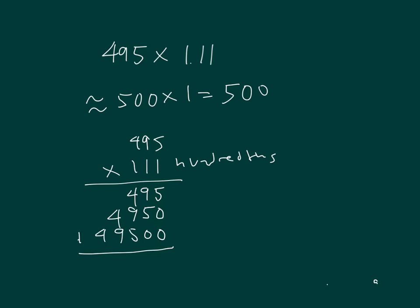Add them. 5, 14, regroup of 1, 14, 19, 9, regroup of 1, 14, 4, regroup of 1, and 5. And then we get to place our decimal point. 549.45.